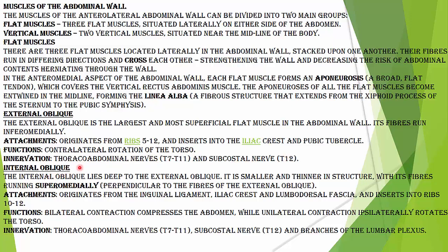The internal oblique lies deep to the external oblique and is smaller and thinner in structure. It originates from the inguinal ligament and iliac crest, and inserts into the 10th, 11th, and 12th ribs. The function is bilateral contraction which compresses the abdomen, while unilateral contraction ipsilaterally rotates the torso. The nerves are thoracolumbar nerves, subcostal nerve, and branches of the lumbar plexus.